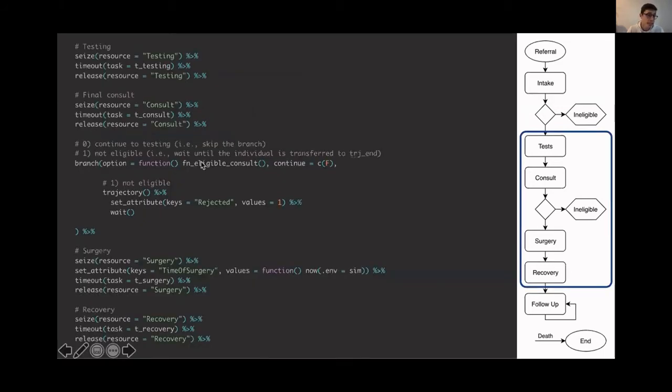Well, then, to do all this, we only need the same function. For the testing, we seize timeout release. For the final consult, we seize timeout release. Then there's another branch for the second triage of whether individuals are eligible or not, which is very similar to the first one. We have the surgery, which we also seize timeout release. But we also record the time of surgery so that later we can calculate the total time between referral and surgery. And then we have the recovery, again, seize timeout release.